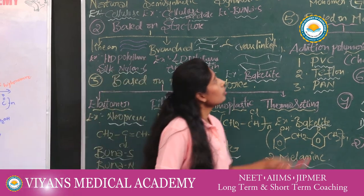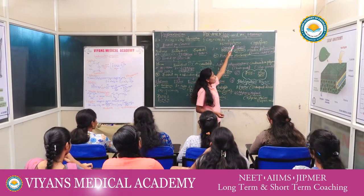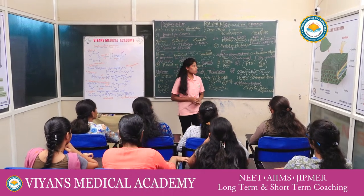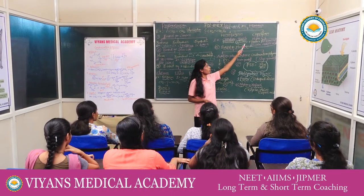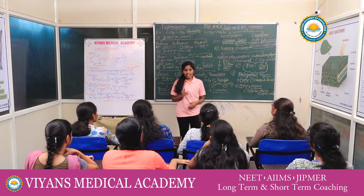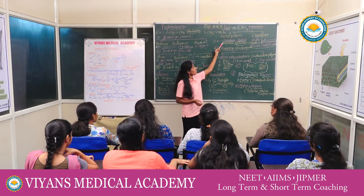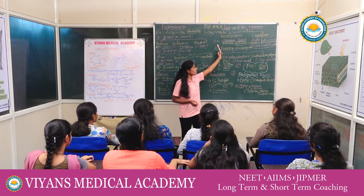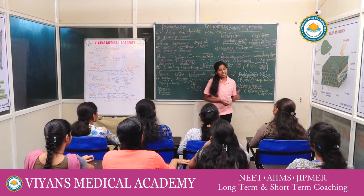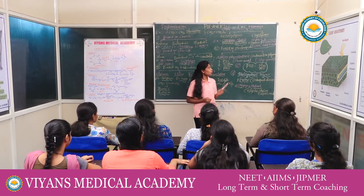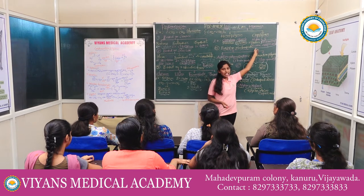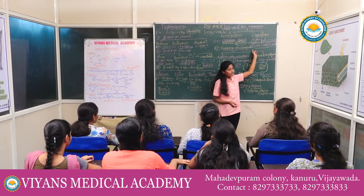The fourth classification is based on monomer. Polymers are classified into two types: homopolymer and copolymer. A homopolymer consists of only one type of monomer; examples are cellulose, starch, and glucose. A copolymer consists of two different types of monomers; for example, nylon 6,6 has monomers hexamethyl diamine and adipic acid.